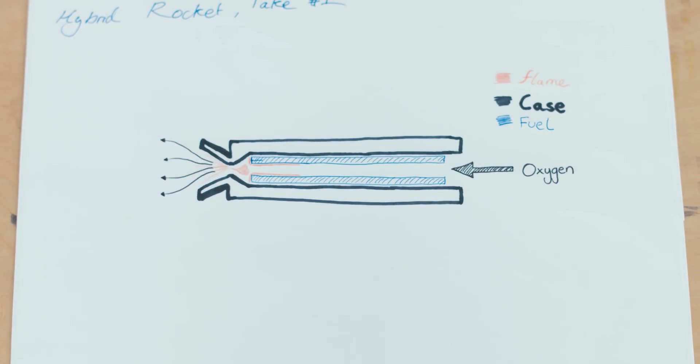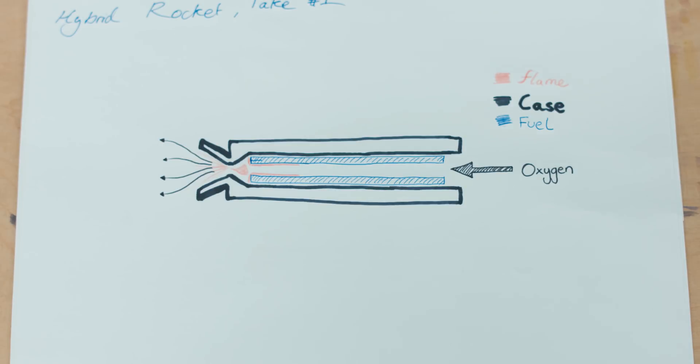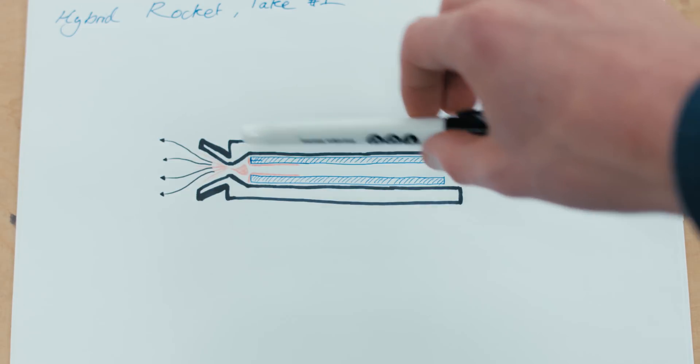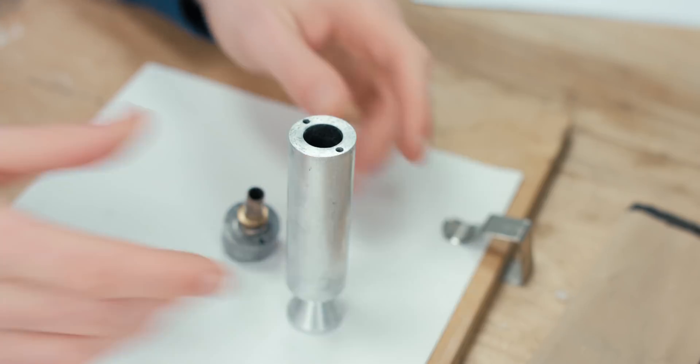So this is the hybrid rocket motor I'm going to make. The basic idea is oxygen gas is blown from here through the fuel and out the nozzle. The nice thing about this engine is that unlike normal solid fuel engines, the thrust can be throttled simply by increasing or decreasing the amount of oxygen going in. Once you've got oxygen flowing, you just need a wick to light the fuel and you're away.